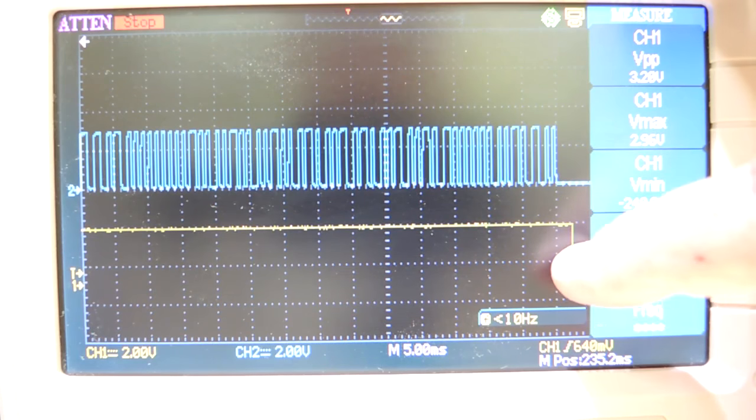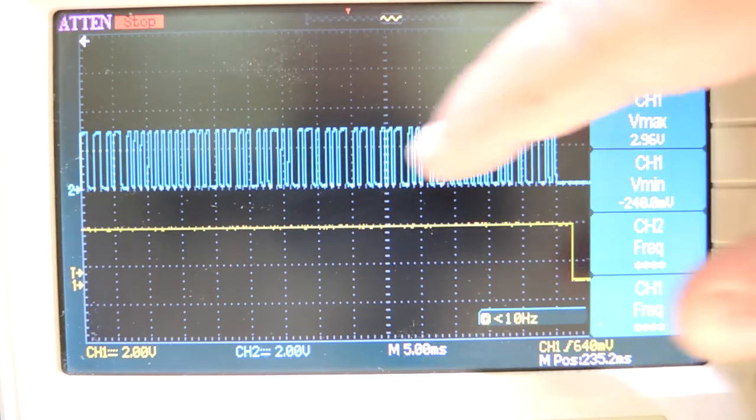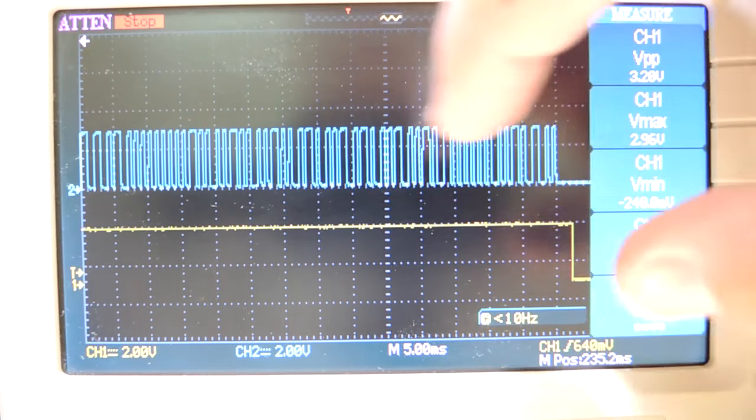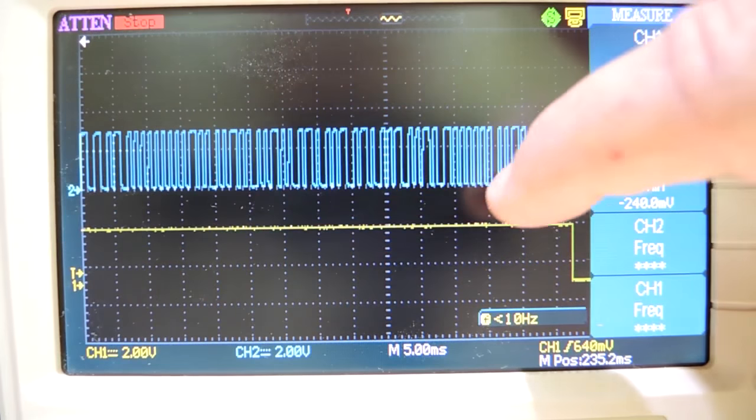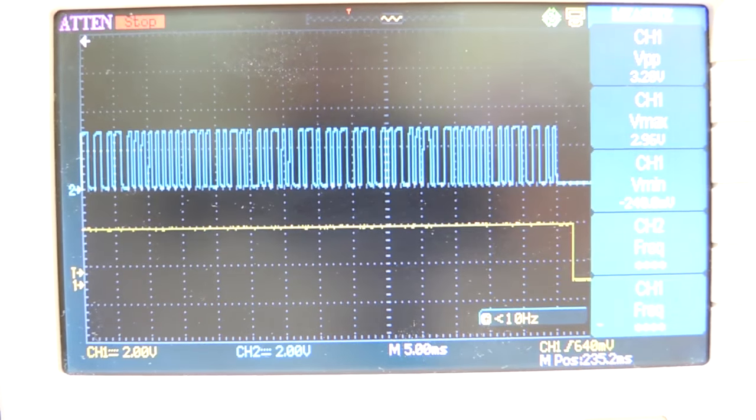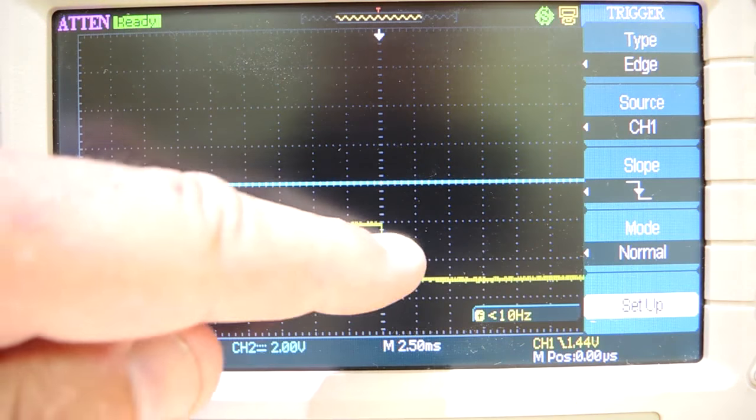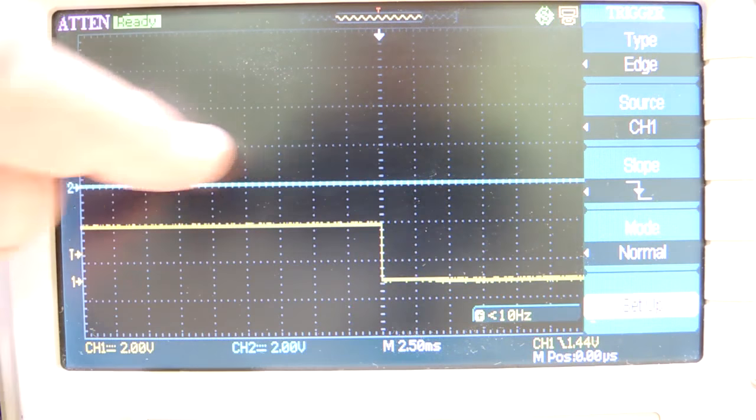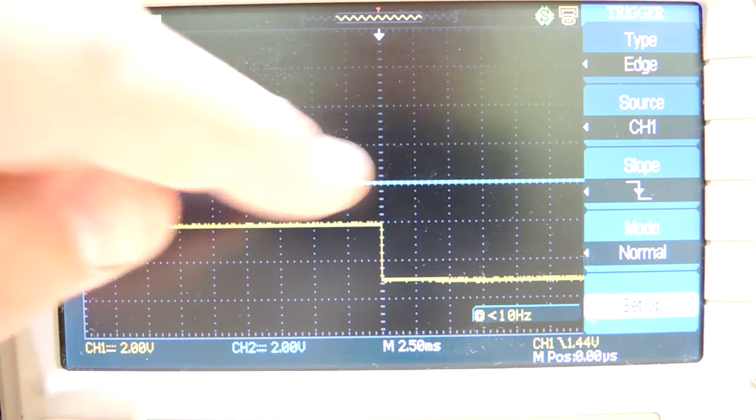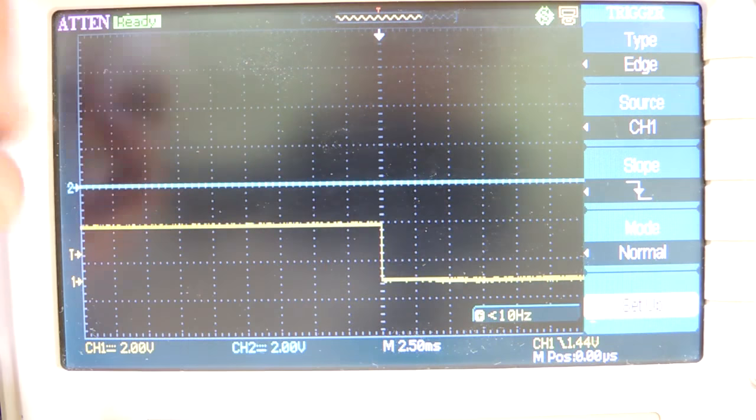I'm going to change the scope so it triggers on the falling edge here, because it looks like otherwise it would just catch the carrier, which isn't so interesting. And we'll try pressing the button and see if this data pattern changes. So I've got the scope now triggering on the falling edge of the power enable to the transmitter. I think all the data is actually at the end of the transaction here, after the carrier has been locked, it sends out the pattern.